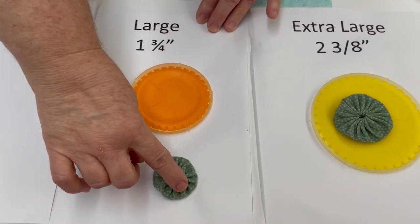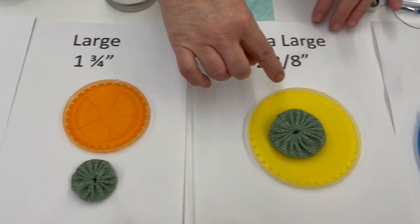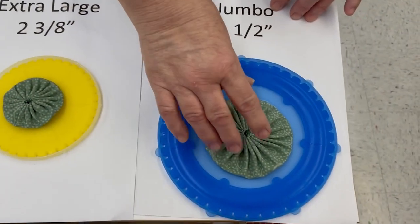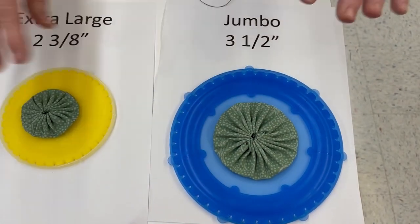Large, which is an inch and three quarters. Extra large, which is two and three eighths. And the jumbo is three and a half.